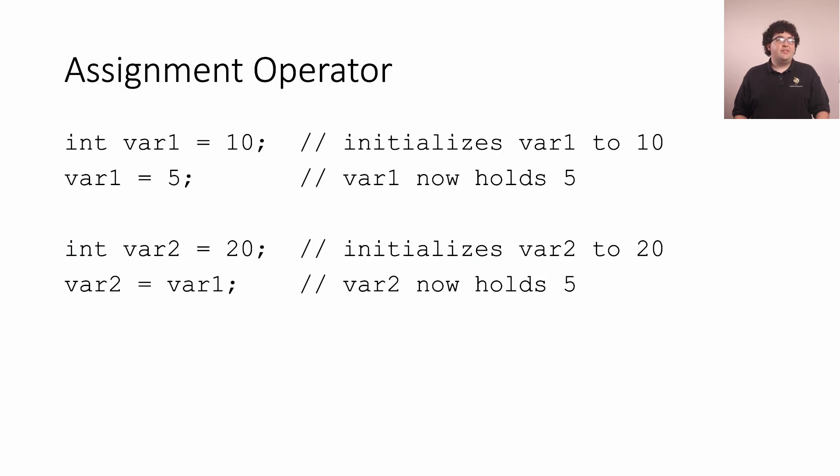Now the way we change the values in a variable is by using operators. The simplest of these operators, at least conceptually, is the assignment operator. We can write the name of an existing variable, then the equal sign, and then an expression that evaluates to a value of the variable's type. This could be a literal, as in another number or letter, or the name of another variable if we want to copy its value. Once this line executes, our variable now holds the new value.